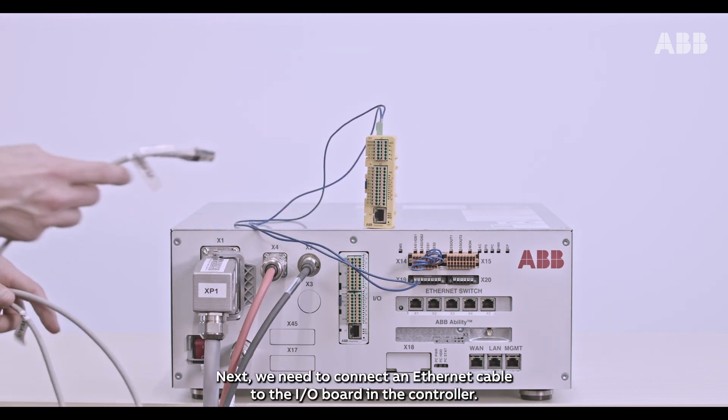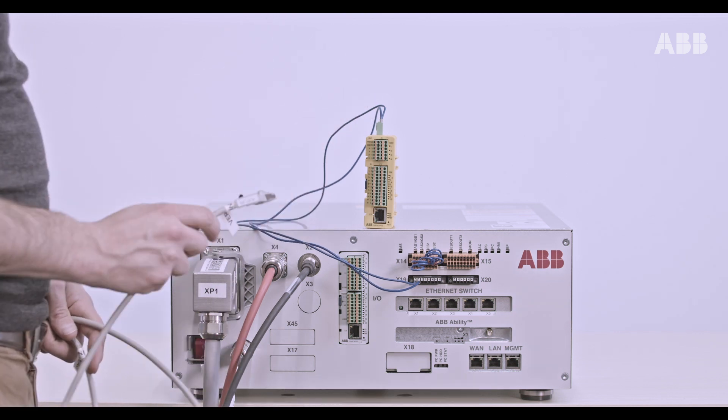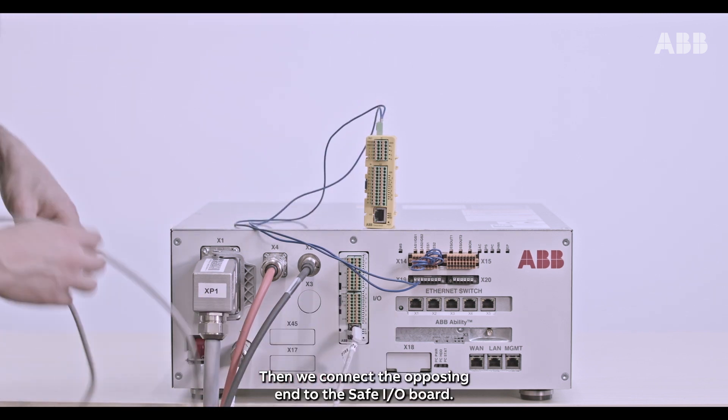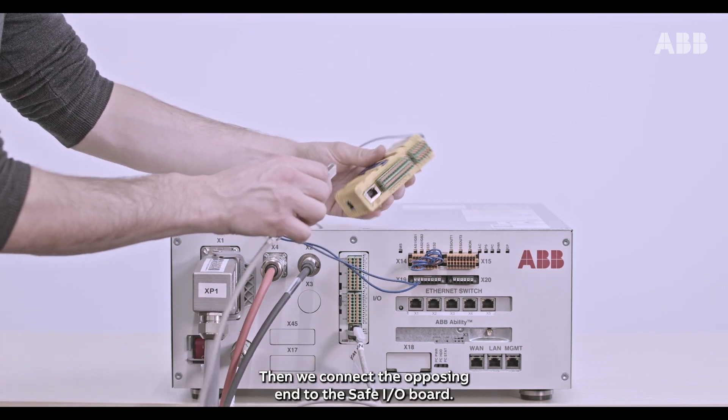Next, we need to connect an Ethernet cable to the I.O. board in the controller. Then, we connect the opposing end to the safe I.O. board.